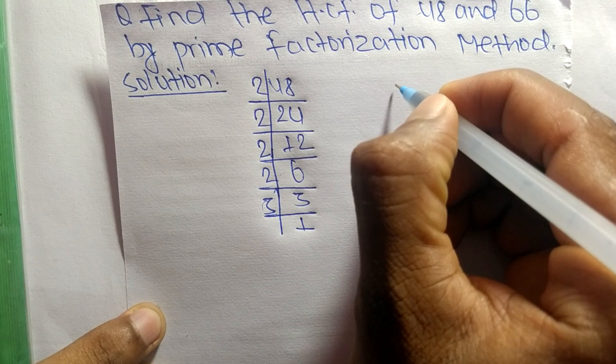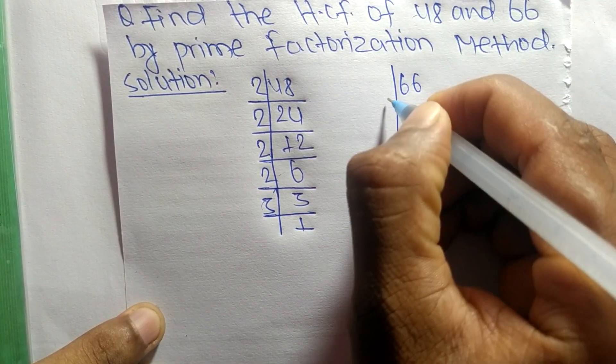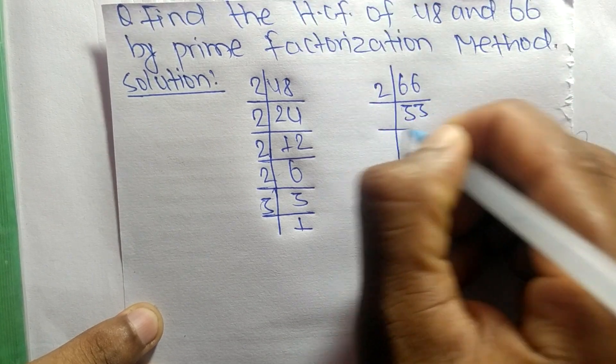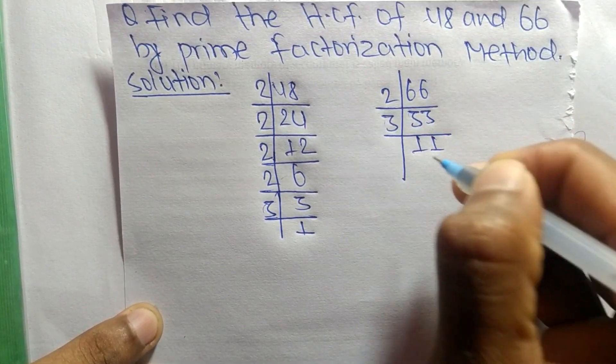Like as the prime factors of 66 are: it is 2 times 33 means 66, 3 times 11 means 33, and 11 times 1 means 11.